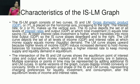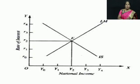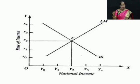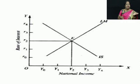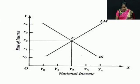This is the IS-LM model diagram. On the x-axis you have national income (Y, the GDP), and on the y-axis you have the rate of interest. The IS curve slopes downward and the LM curve slopes upward.